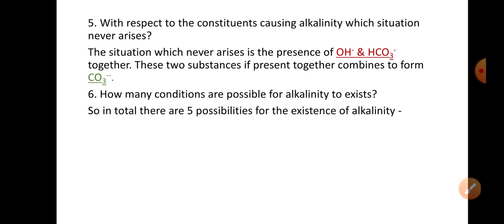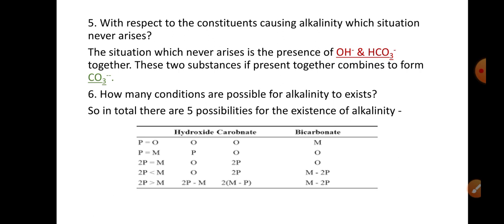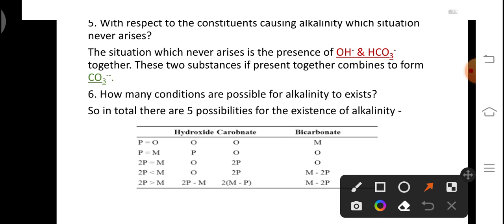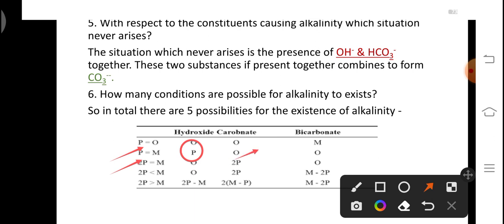How many conditions are possible for alkalinity to exist? In total there are five possibilities. The very first condition is when the reading of phenolphthalein (P) comes to be zero — this indicates the presence of bicarbonate ions. The second condition is when the readings of phenolphthalein and methyl orange (M) are equal (P = M), meaning only hydroxide ions are present and carbonate and bicarbonate are absent. The third condition is when 2P = M (or P = M/2) — in this case only carbonate ions are present, and the formula to calculate their strength is 2P.